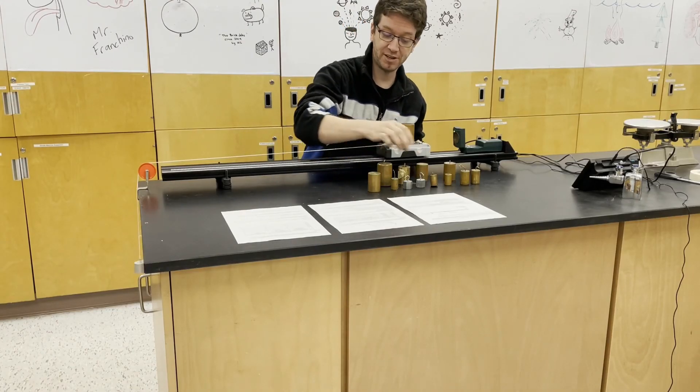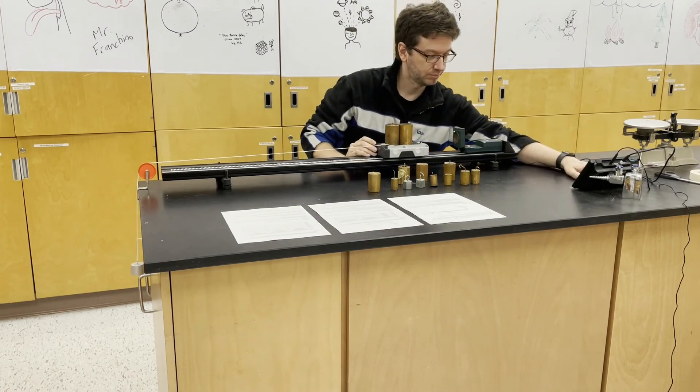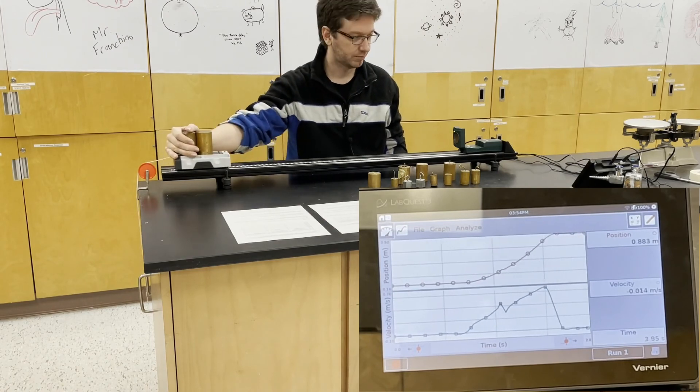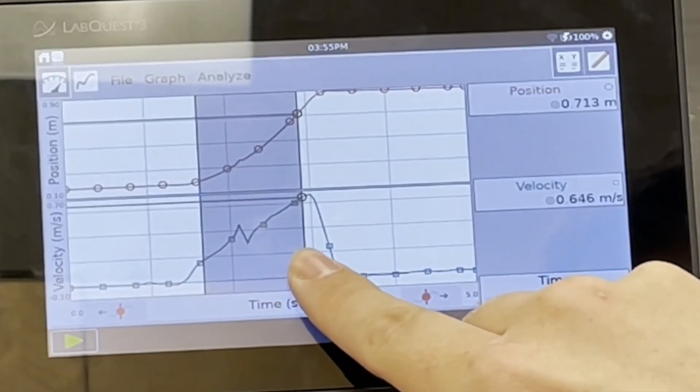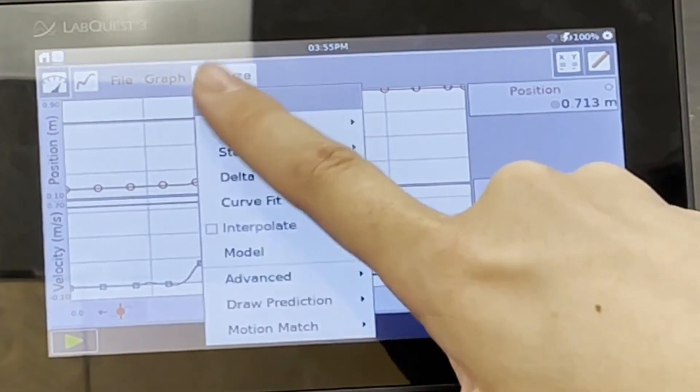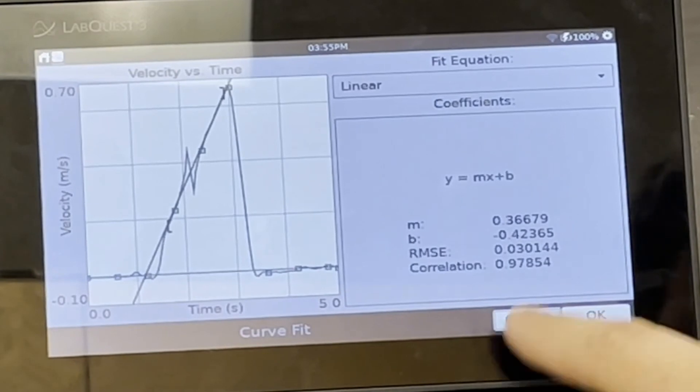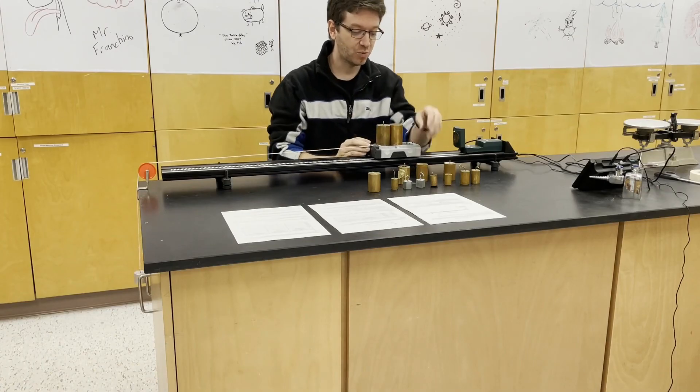Next, add another 500 grams. So now our acceleration is 0.36679 meters per second squared.